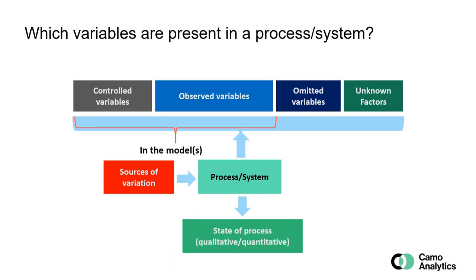And then we have all the various sources of variation: raw material, sample origin, time, or for example the equipment used — maybe we have four chemical reactors running in parallel. And still with all these sources of variations, some known and some not known, we want the state of the process to be the same, either qualitatively or in a quantitative fashion.